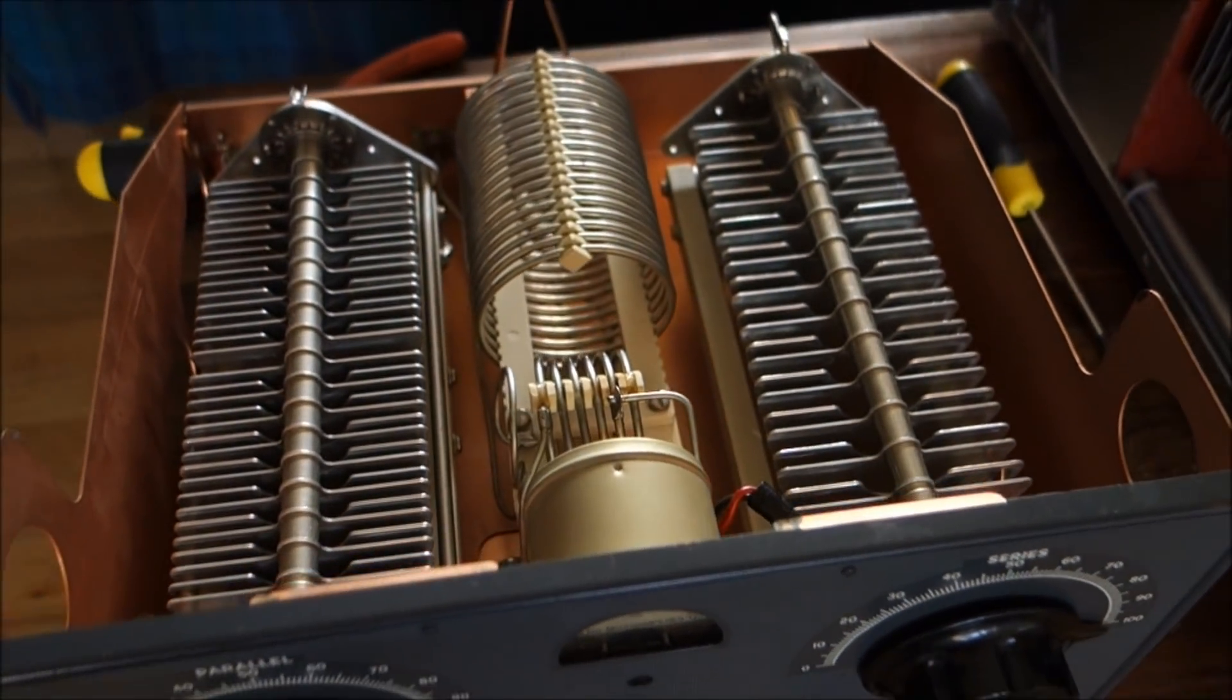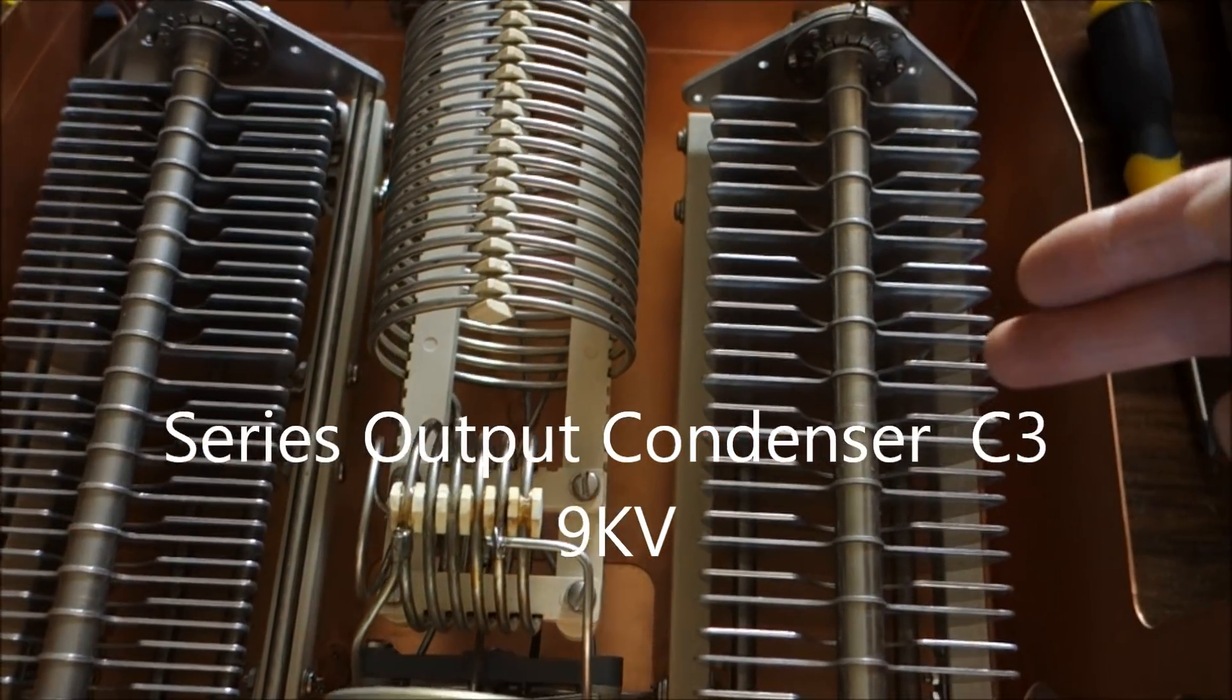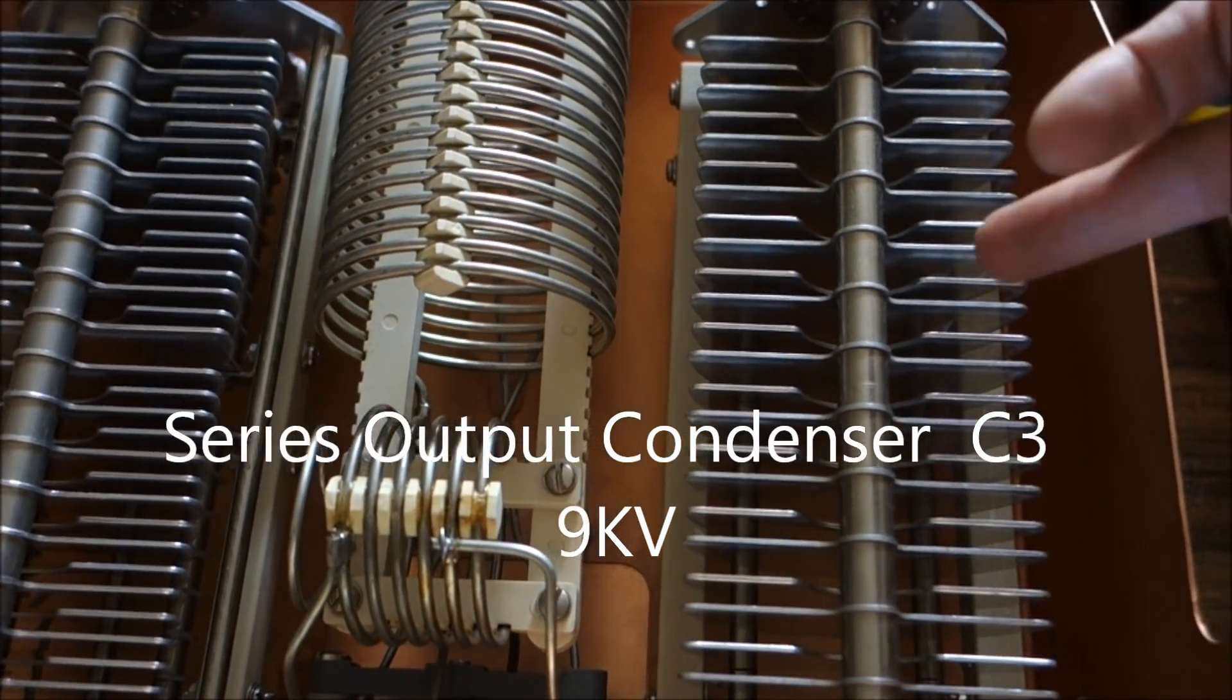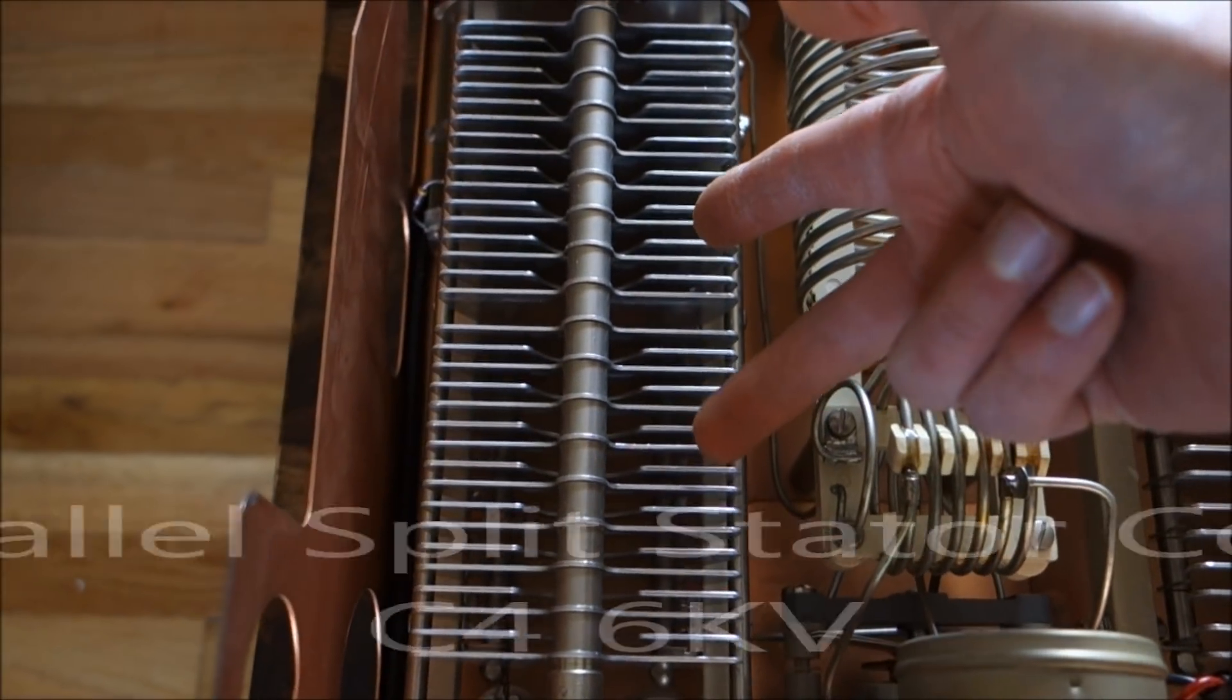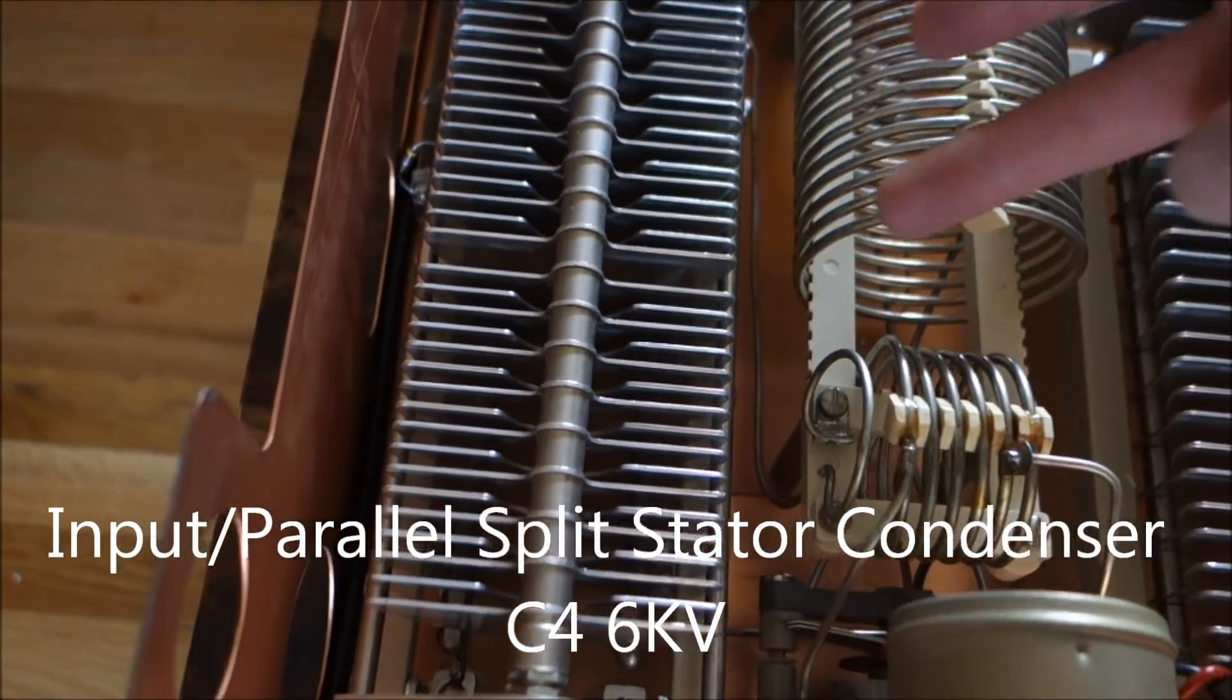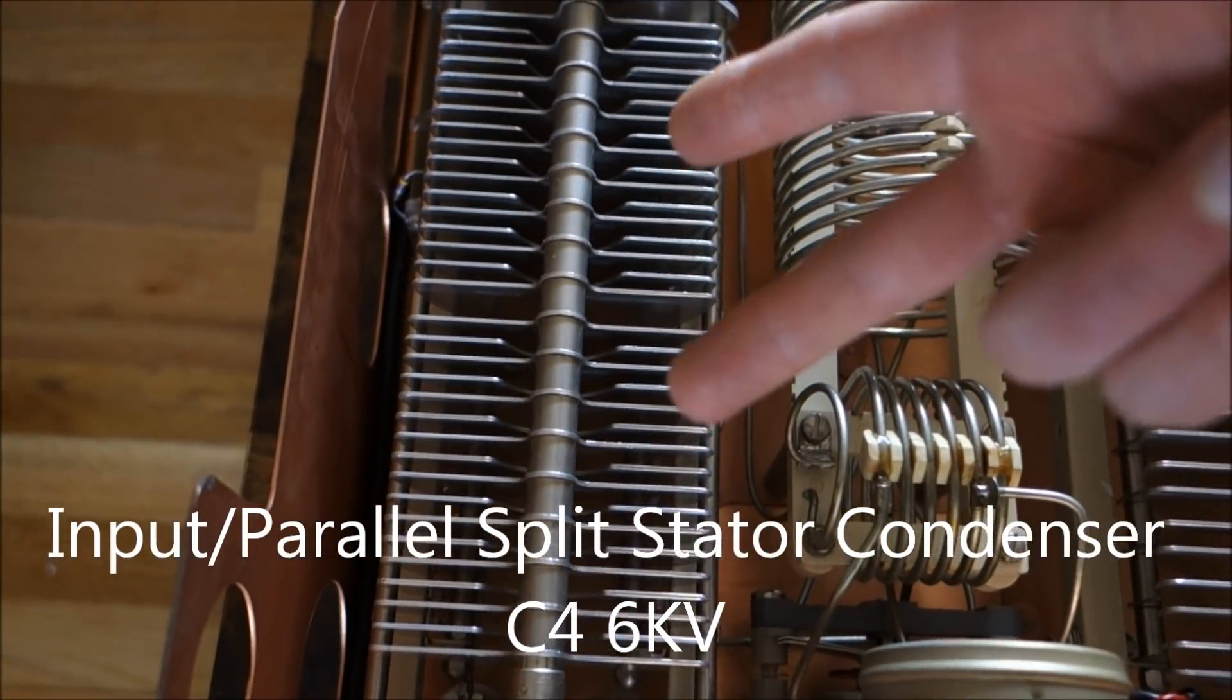If you look at the size of the components, this is the series condenser on the output, which is rated at 9 kV. This dual capacitor that's in parallel with the switched or tapped roller inductor is rated at 6 kV.